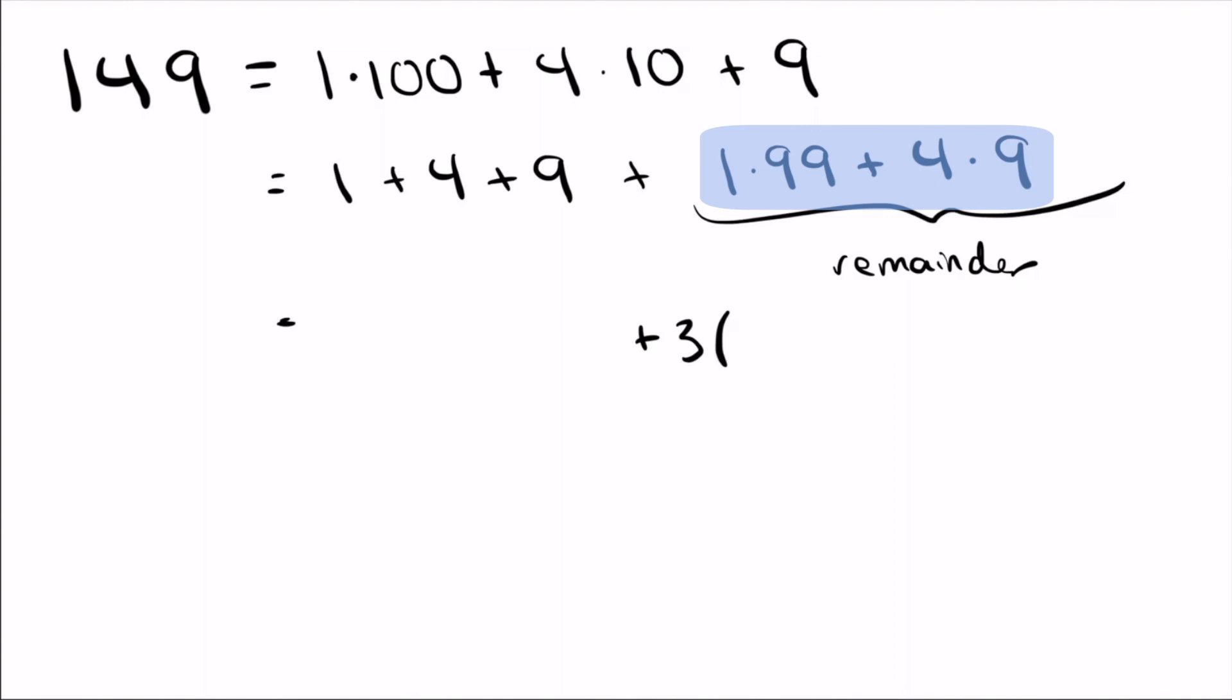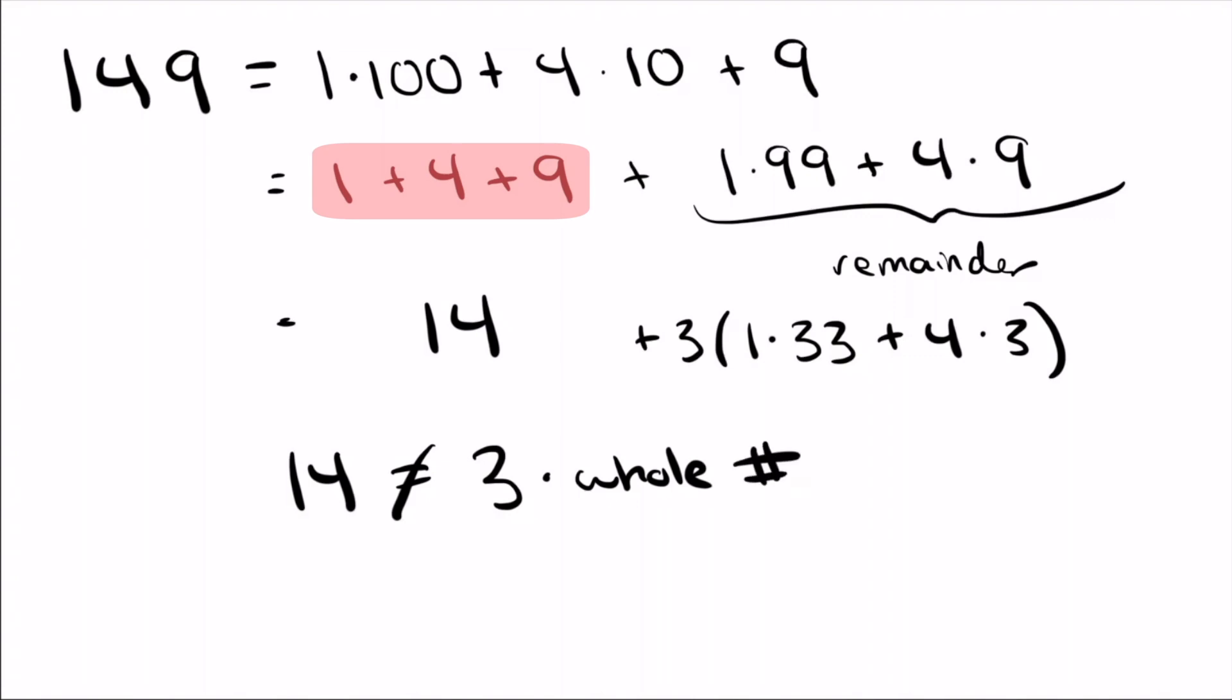Can I take a 3 out of the remainder? Yes, absolutely, because I've got the 99, which 3 goes into, and I've got the 9, which 3 goes into. What about this original part? 1 plus 4 is 5, plus 9 gives me 14. Can I take a 3 out of this? No, I cannot. 14 is not equal to 3 times a whole number. In fact, if you take your calculator, what you'll see is 14 is 3 times 4.666, 6 repeating. So because I couldn't factor a 3 out of the 14, I couldn't factor a 3 when I added up the digits. That means I can't factor a 3 out of the right-hand side, so the original number is not divisible by 3.